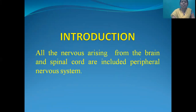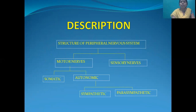Today we will discuss the peripheral nervous system and autonomic nervous system. All the nerves arising from the brain and spinal cord are included in the peripheral nervous system. The peripheral nervous system has 2 types: motor nerve and sensory nerve.